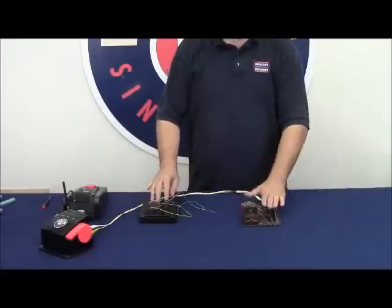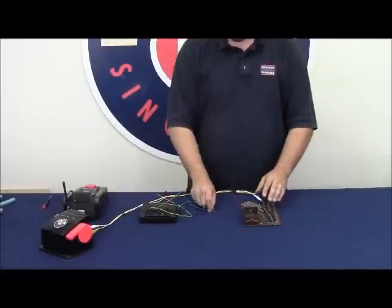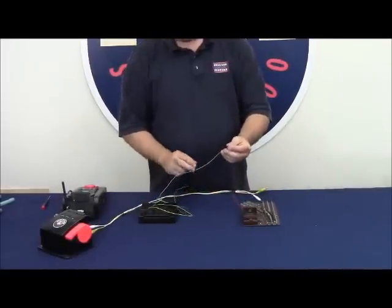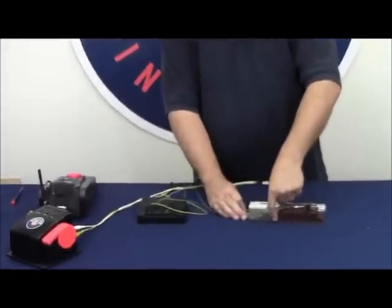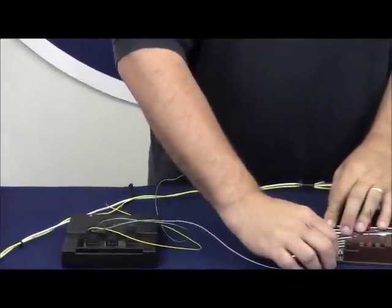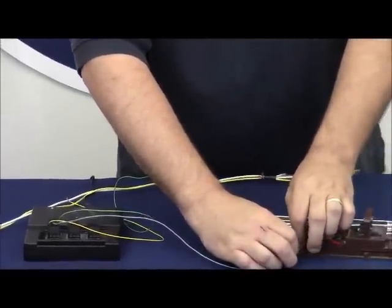To connect our SC2 to our O27 switch, we take the center common wire, which in this instance is gray. We're going to connect it to the terminal closest to the motor cover, which is the ground for the switch machine itself.